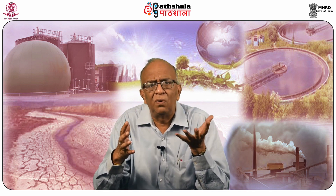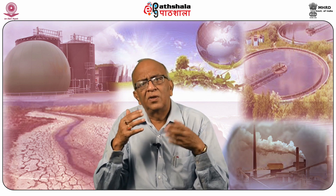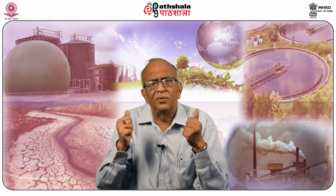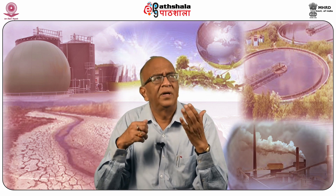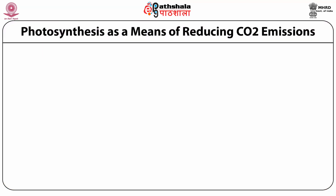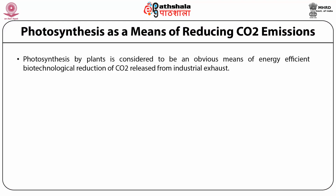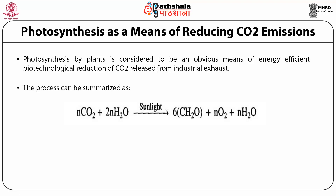This has led to the thinking of devising means of possible reduction of carbon dioxide emissions. Among the chemical approaches, the possibility of biotechnological reduction is also being investigated in different parts of the world as an alternative approach. Photosynthesis by plants is considered an obvious means of energy-efficient biotechnological reduction of carbon dioxide released from industrial exhaust. The process can be summarized by an equation where n molecules of carbon dioxide react with n water molecules in the presence of sunlight to form carbohydrates, releasing oxygen and water.